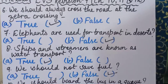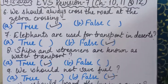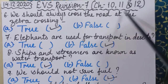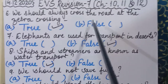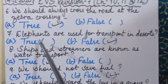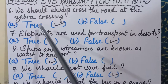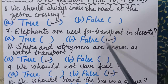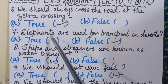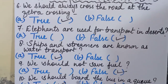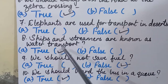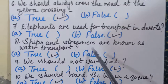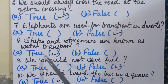Repeating questions six to ten: We should always cross the road at the zebra crossing — true. Elephants are used for transport in deserts — false, because in deserts we use camels. Ships and steamers are known as water transport — true. We should not save fuel — false. We should board the bus in a queue — true.